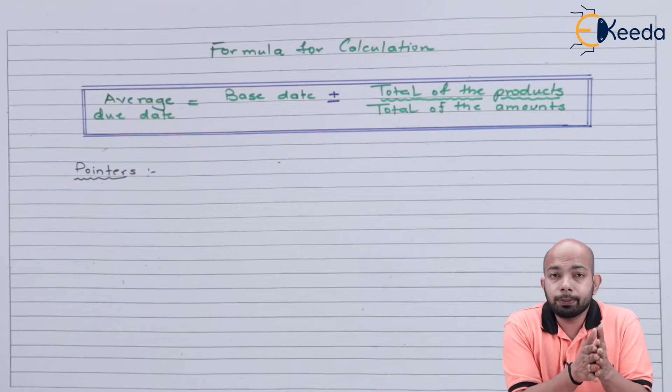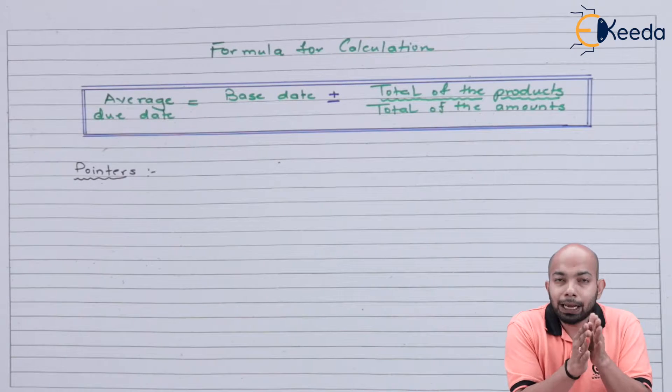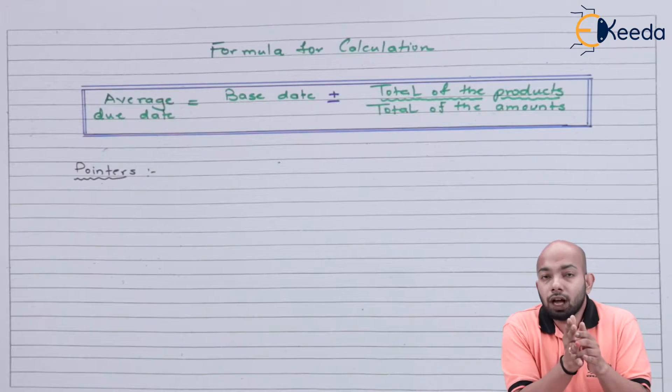The basic formula is: Average due date = Base date ± (Total of the products / Total of the amounts).